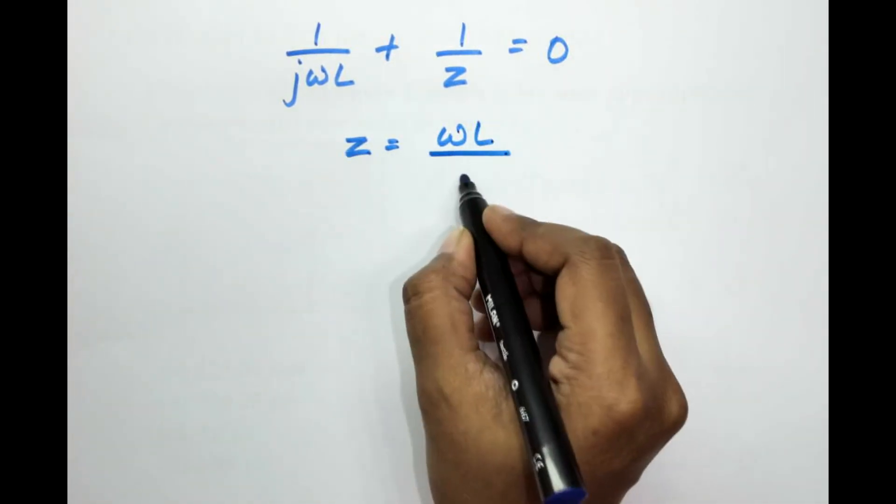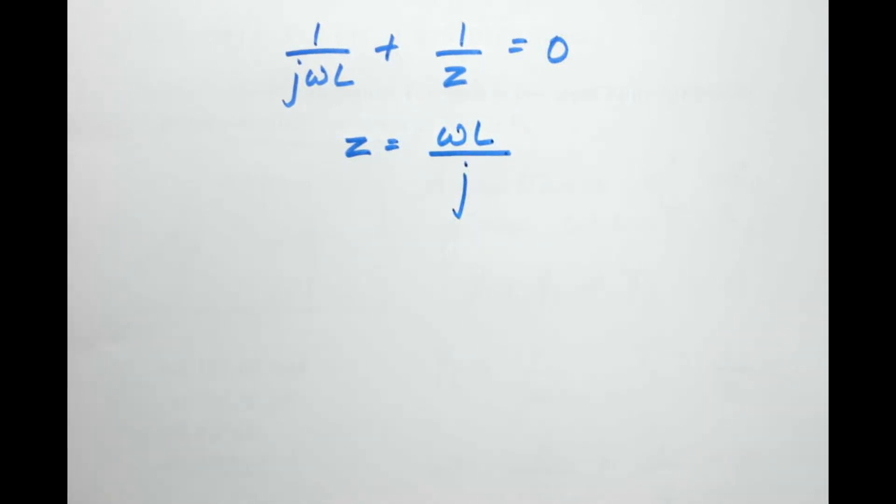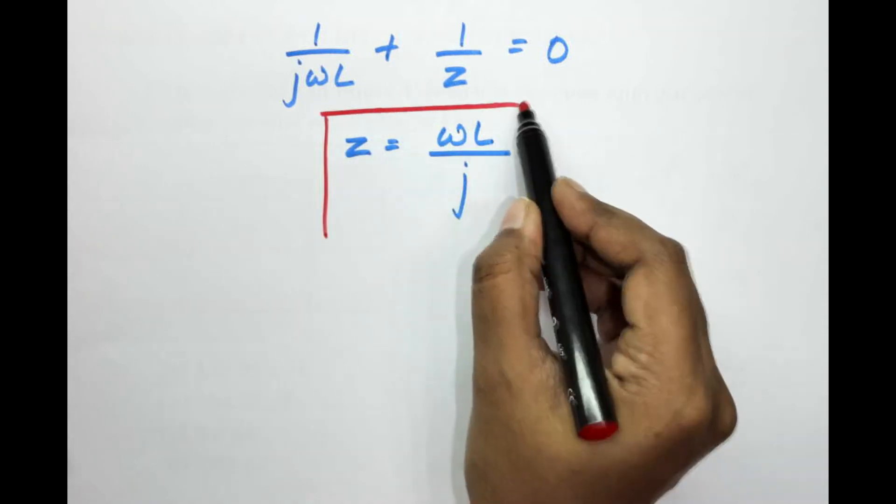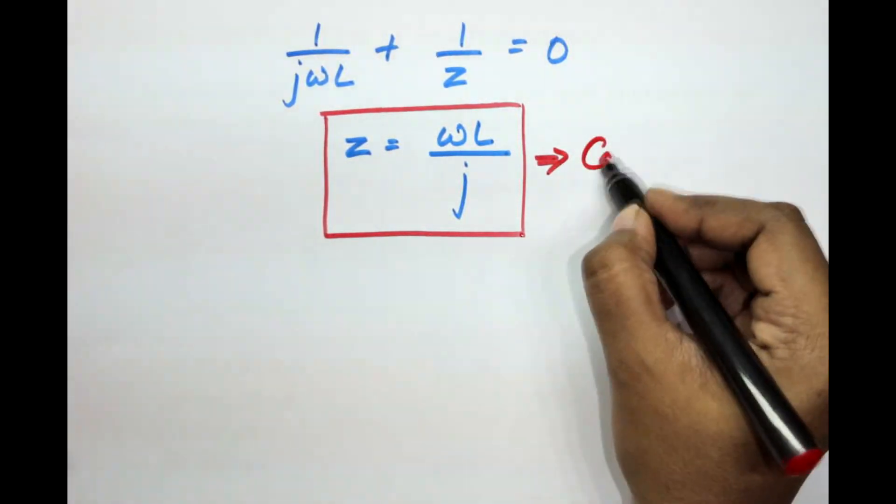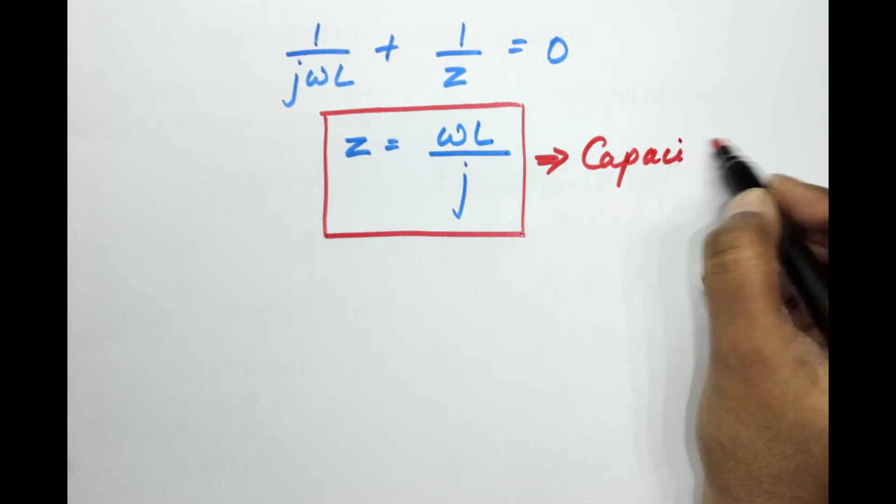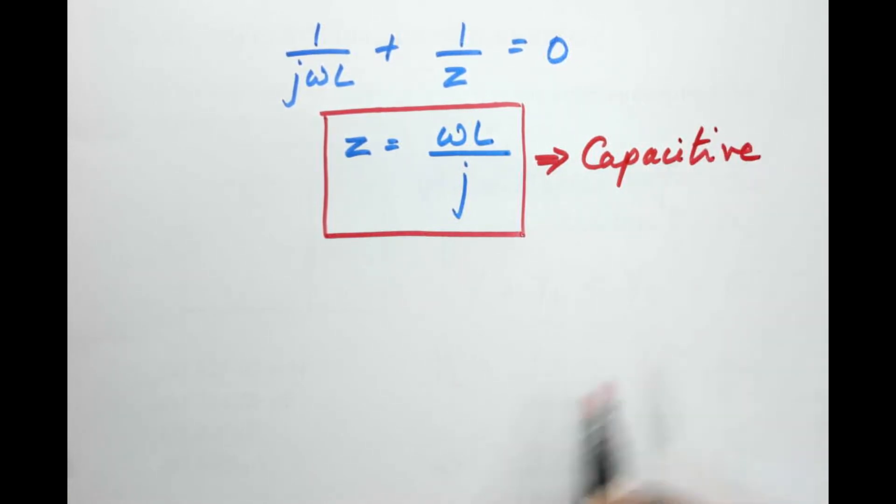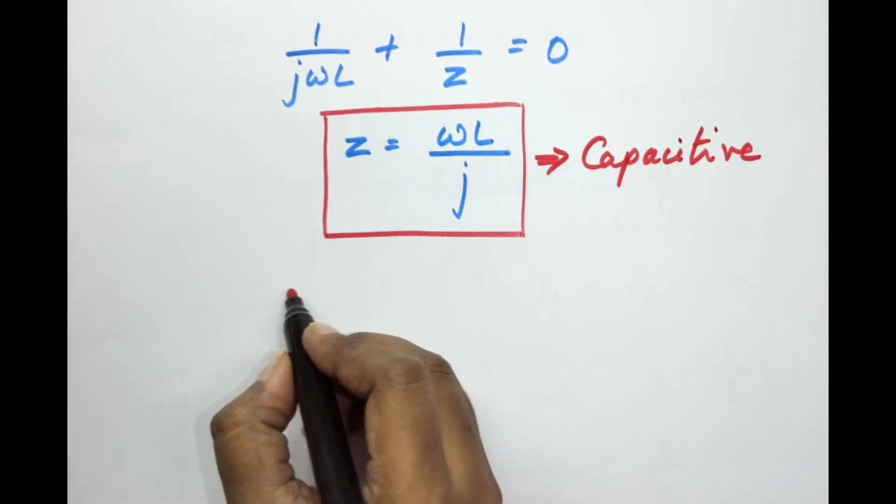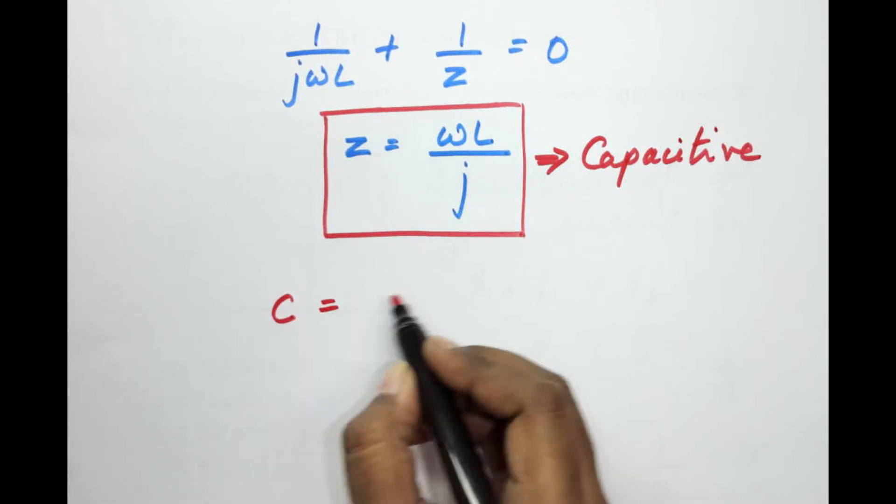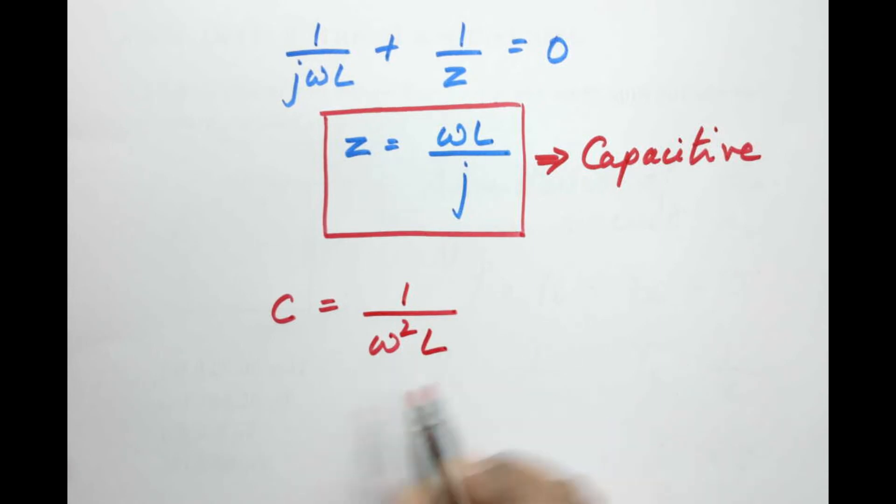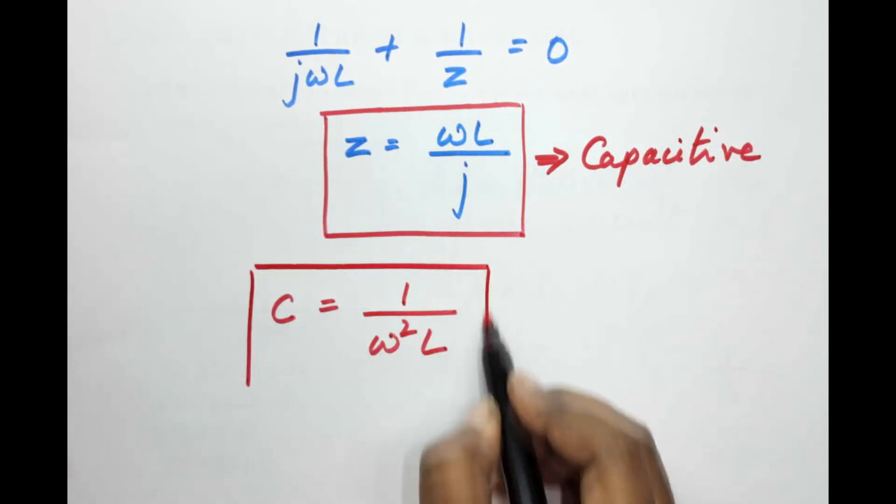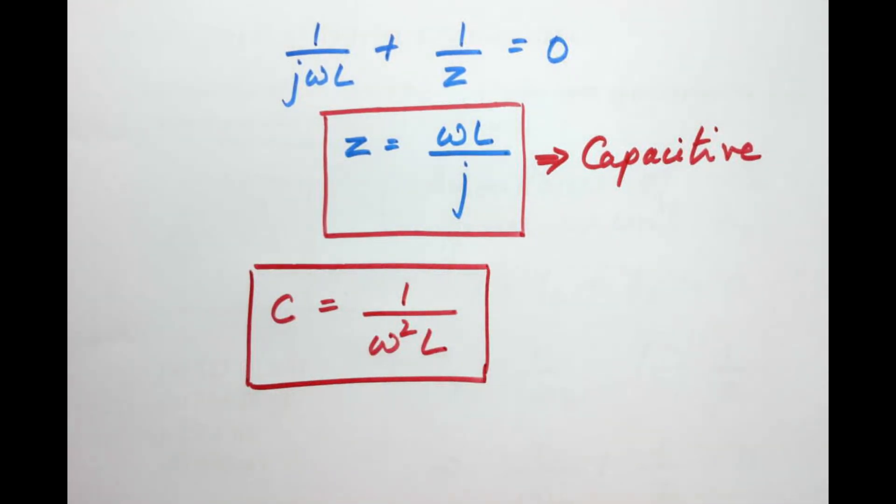Now this part over here tells us that the Z element is capacitive. So because it is capacitive we use the capacitive expression C equals 1 divided by ω²L. Now this is the formula, please make note. C equals 1 by ω²L.